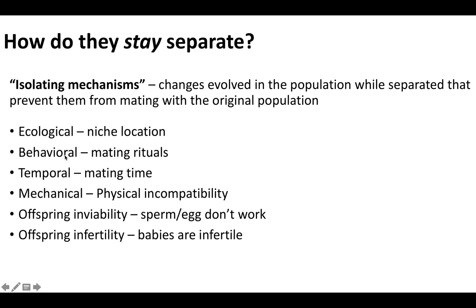A second example is behavioral isolation, which has a lot to do with mating rituals — bird songs, bird dances, rams or deer fighting with antlers, or dewlap color and the way lizards flash their dewlaps. This mating ritual is all about the behavior of the organism. If one species sees another species' behavior and is not attracted to it, that's a behavioral isolating mechanism that will prevent them from mating with one another.